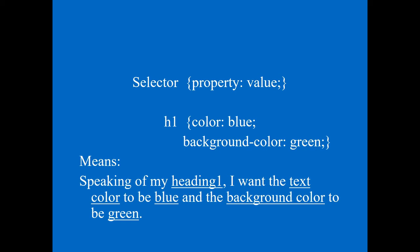Now I want to also change the background color. Note that 'color' means font color and 'background-color' means the background behind the text. Under a single selector you can add multiple property-value pairs. For example: h1 { color: blue; background-color: gray; } — this sets the h1 text color to blue and the background color to gray. You can add as many properties as you want inside the curly braces.